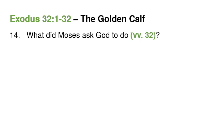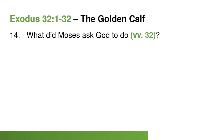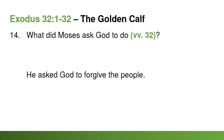Number fourteen: what did Moses ask God to do in verse 32? Moses once again interceded for the people and asked God to forgive them for this terrible sin. And God does forgive them — he doesn't destroy them all and wipe them out and start over, even though he would have been perfectly justified in doing so. He forgives the people.